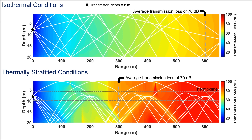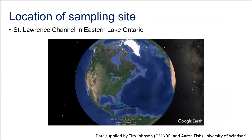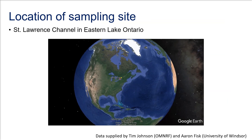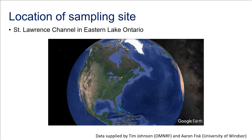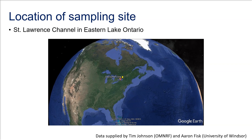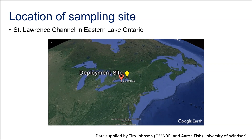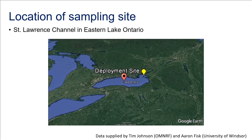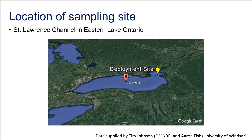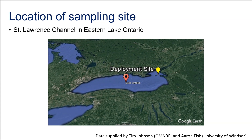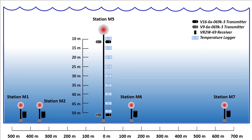Based on the idealized Bellhop model, our hypothesis is that thermal stratification can significantly affect detection range due to transmission loss caused by refraction. To test this hypothesis, we used data from a field study in the strongly stratified waters of the St. Lawrence channel at East St. Lawrence Lake Ontario. At this study site, we deployed acoustic receivers, reference fish tags at fixed locations, and temperature loggers to test the effect of the temperature gradient on detection performance.